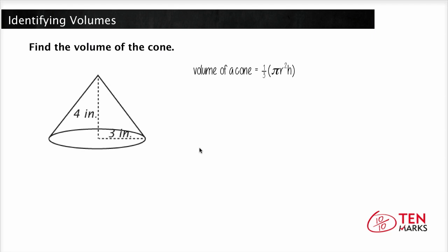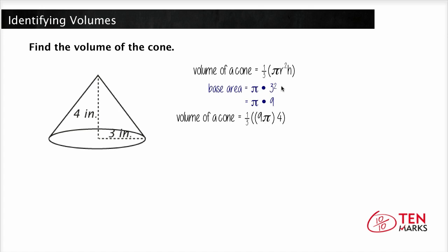Let's find the volume of this cone. The radius is 3 inches, so the base area is pi times 3 squared, which gives us 9 pi. We plug this back into our formula and substitute 4 inches for the height, so we get the volume as 1 third times 36 pi, and multiplying that out gives us 12 pi. So the volume of this cone is 12 pi inches cubed.